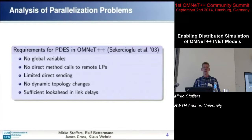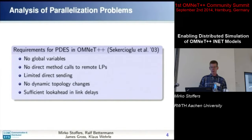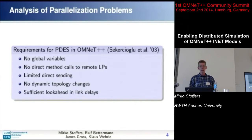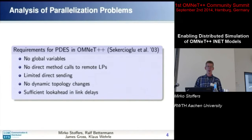There were five requirements. First, you are not allowed to use global variables — when you partition your model, different parts execute on different machines with no shared memory. Second, you cannot directly execute methods on different logical processes. Third, there are limitations on direct sending. Fourth, dynamically changing the model topology is not supported. Fifth, you must have some kind of lookahead — link delays between logical processes — so that parallelization can benefit.